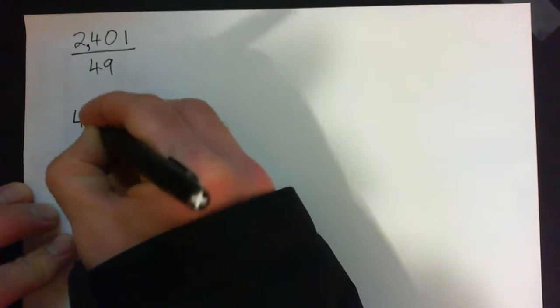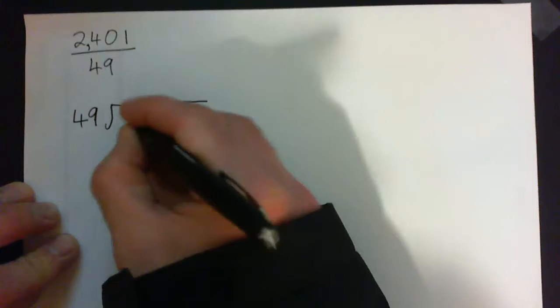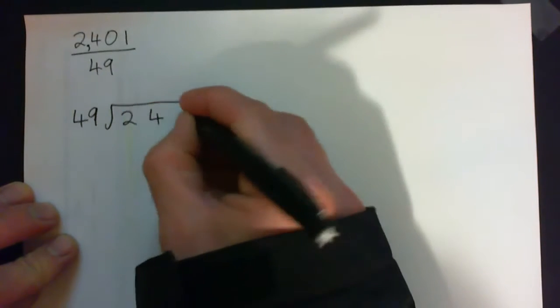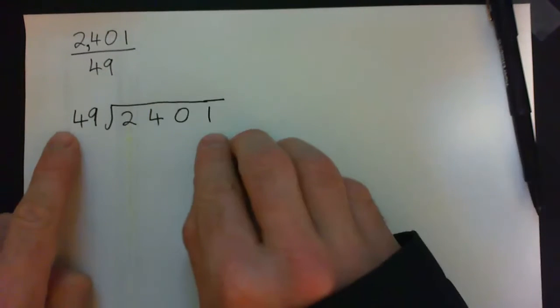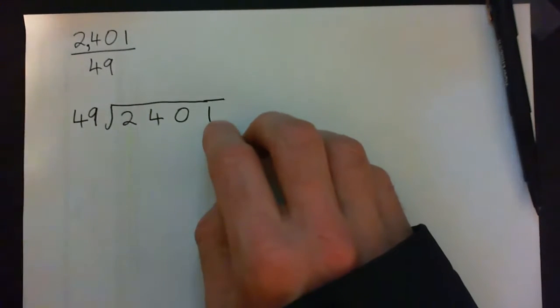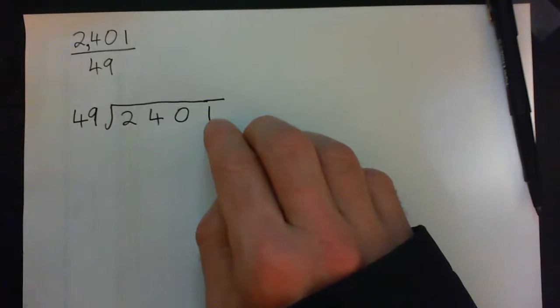So this one is 2,401 divided by 49. I'm going to solve this by long division and this is how we write it out: 49 into 2,401. We can't just do it all at once in our head, so we try to do it bit by bit.